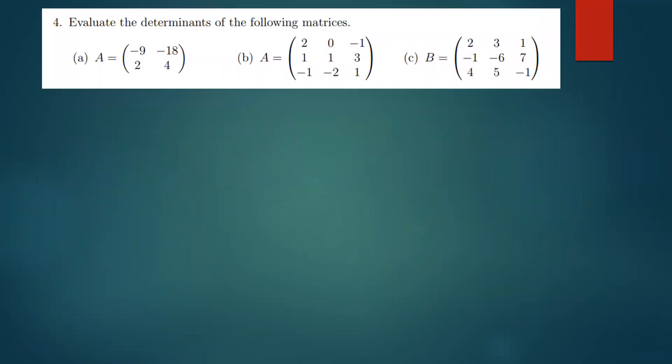This question is simple. It asks us to evaluate the determinants of the following matrices. To find determinants, I'm going to first show you how to find the determinant of a two by two matrix, then move on to a three by three. That method also applies to four by four, five by five, or any larger matrix. There are basically a number of ways to find determinants, and I'm going to show you the simplest.